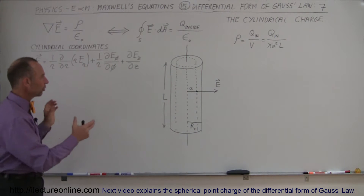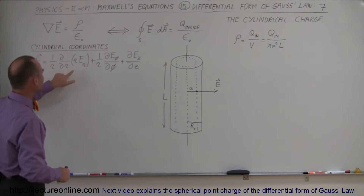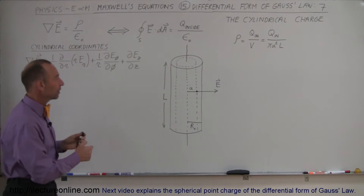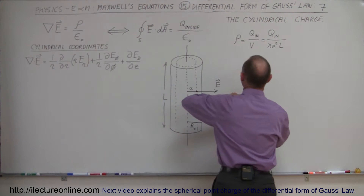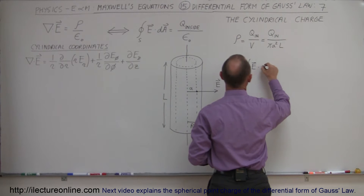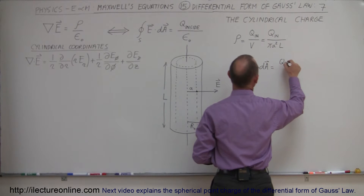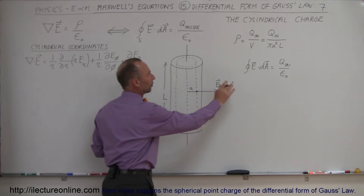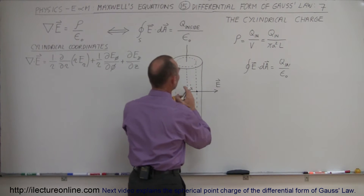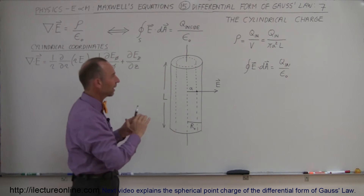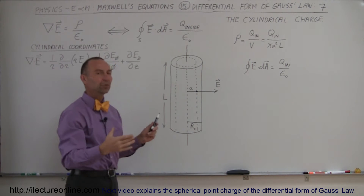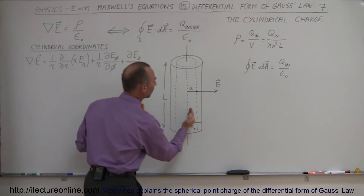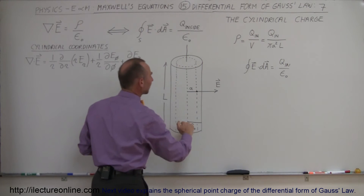To show that these equations are equivalent, we're going to take the divergence of the electric field. But first we need to know what the electric field is, so we'll use the integral form of the equation to find the electric field at this particular point inside the cylinder. The surface integral of E dot dA is equal to the charge inside divided by epsilon sub naught. We'll multiply by the surface of the cylinder, ignoring the ends since this is effectively an infinitely long cylinder relative to its radius, and find the surface area on the sides only.